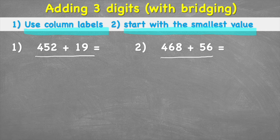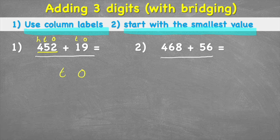Looking at 452 add 19, it's important to put our column labels on top. In 452, the two is in the ones column, the five in the tens, and the four in the hundreds. In 19, the nine is in the ones and the one is in the tens column. Putting ones, tens, and hundreds labels on your columns makes it much easier to place numbers correctly.